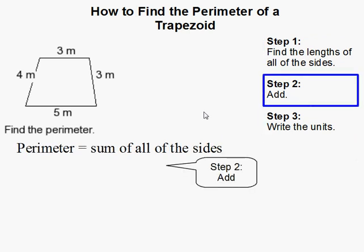So all we have to do is add up the lengths of each side. So we have 3 plus 4 plus 3 plus 5. Very simple.